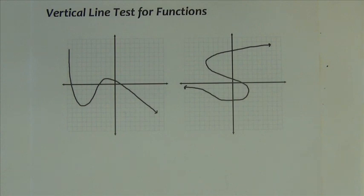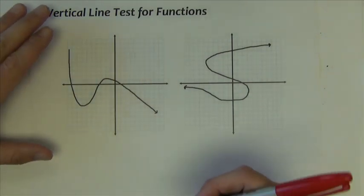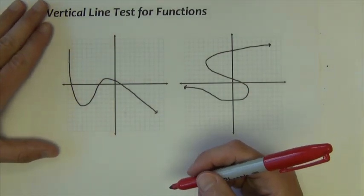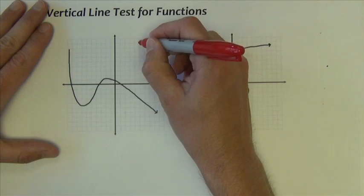Now a mapping diagram is just one way to determine if you have a function or not. Another way is to do a vertical line test. Vertical line test is a nice visual test for dealing with functions. What you do is you take a vertical line.